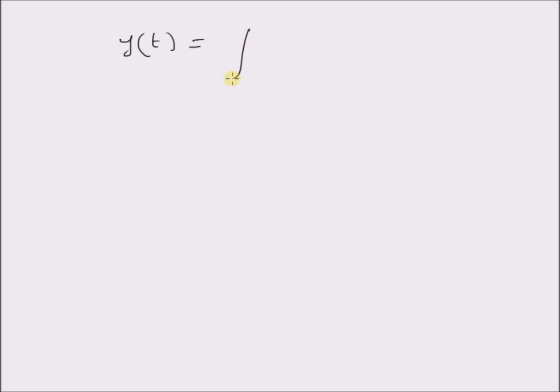Hello, welcome. In this short video, let us look at an example validating the relation between the impulse response and the unit step response of a system. In this example we will look at the following system equation: y of t is equal to the integral from 0 to t of e power minus (t minus tau) x of tau d tau, for values of t greater than or equal to 0.